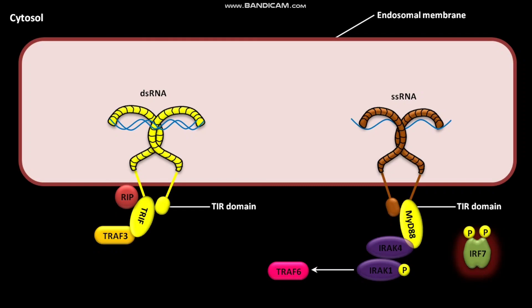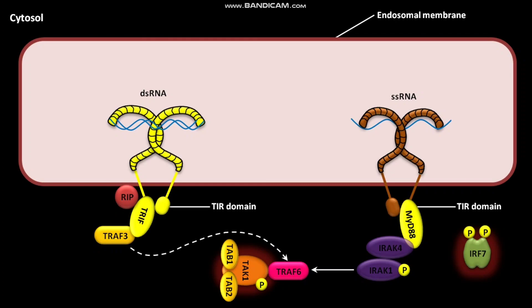TRAF6 creates a scaffold that acts as an organizing center for subsequent signaling components. The adapter proteins TAB1 and TAB2 then bring associated TAK1 into proximity with IRAK1. IRAK1 phosphorylates and activates TAK1. TRIF also activates TRAF6.